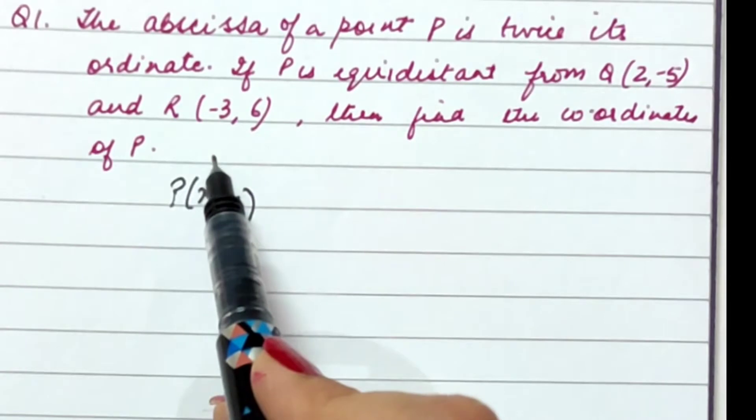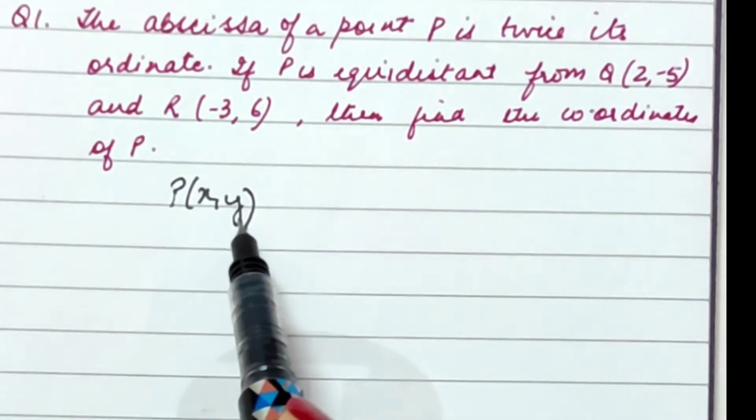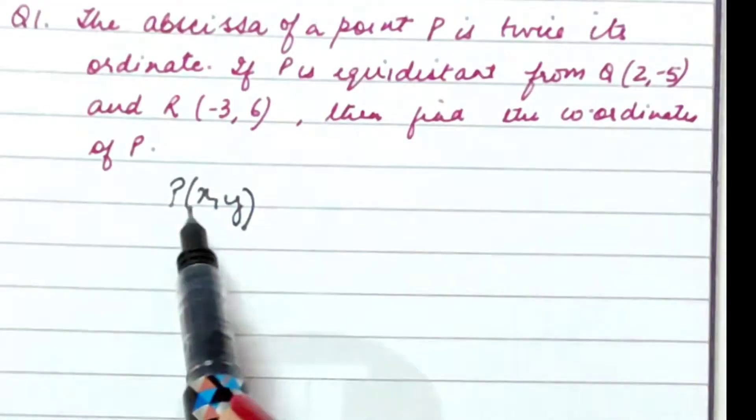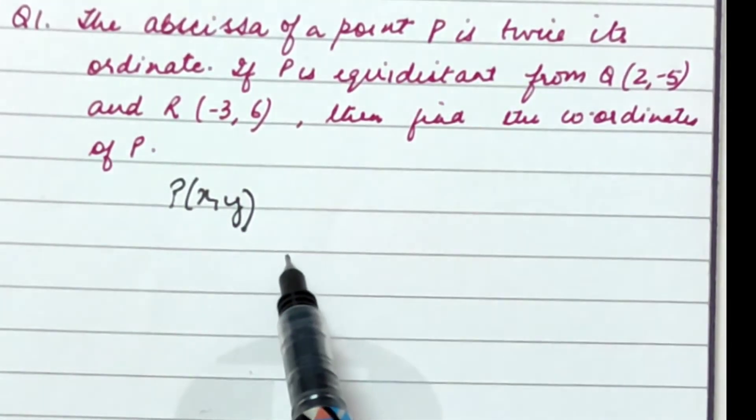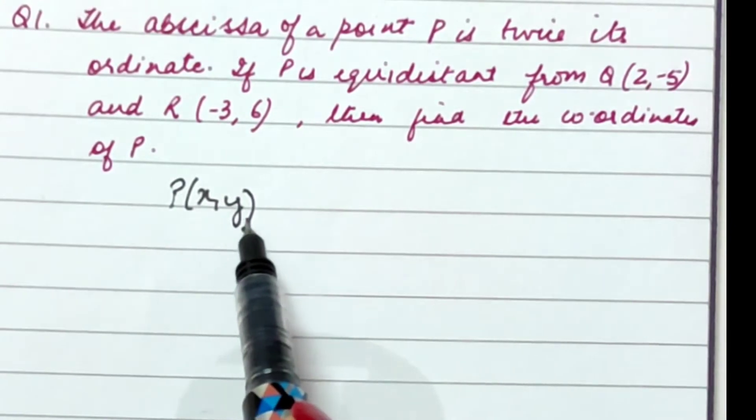Now how do we do this question? First of all, we will assume the point to be P(x,y). Now what is given to us? Please read carefully the abscissa of this point. So if I take this point P(x,y), then x is the abscissa and y is the ordinate. So it says that abscissa is twice its ordinate.